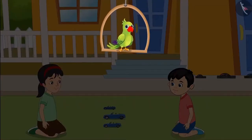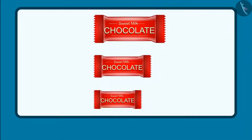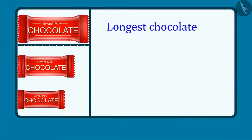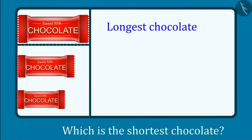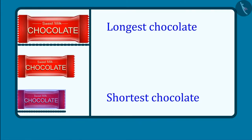So kids, now you can also identify the longest object and the shortest object out of three objects like Chotu. Come, let's see. These are three chocolates. Can you tell me which is the longest chocolate out of these? Yes, this chocolate is the longest. And which is the shortest chocolate out of these three? Yes, this chocolate is the shortest. Out of these three chocolates, this is the longest chocolate and this is the shortest chocolate.